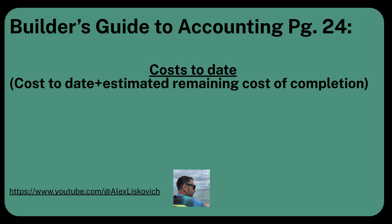Alright, percentage of completion. The first thing is, if you don't remember the formula, you don't need to memorize it. All you have to do is go to page 24 of the Builder's Guide to Accounting — all the way at the bottom of the page is the formula you need. It's very simple: cost to date divided by cost to date plus estimated remaining cost of completion.